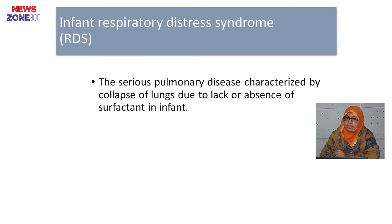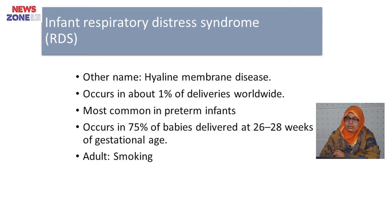What is RDS, or infant respiratory distress syndrome? It is a serious pulmonary disease characterized by collapse of the lung due to lack of or absence of surfactant in infants. Its other name is hyaline membrane disease. It occurs in about 1 percent of deliveries worldwide, most commonly in preterm infants — 75 percent of babies delivered at 26 to 28 weeks of gestational age. It may also occur in adults who smoke.